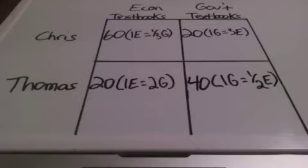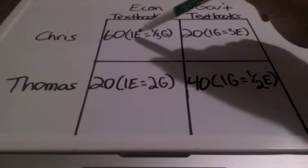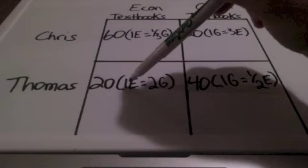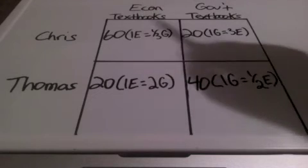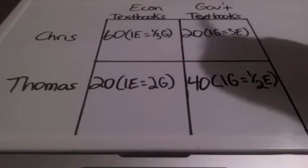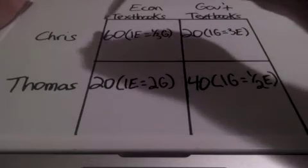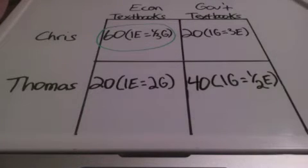So we need to figure out who is giving up less of the other good, and then we can figure out who will specialize. Let's take a look at the econ textbooks first. For every one econ textbook, Chris can produce one-third of a government textbook, and Thomas can produce two government textbooks. Who is giving up less of the government textbooks? One-third would be less than two, so I'm going to circle this — this tells me that Chris has a comparative advantage in producing economics textbooks.